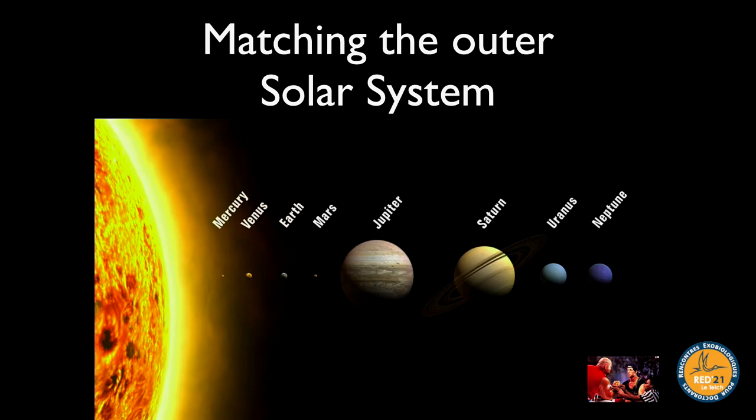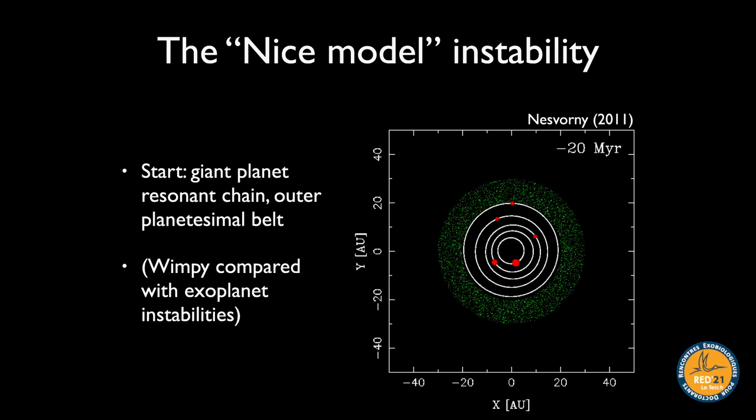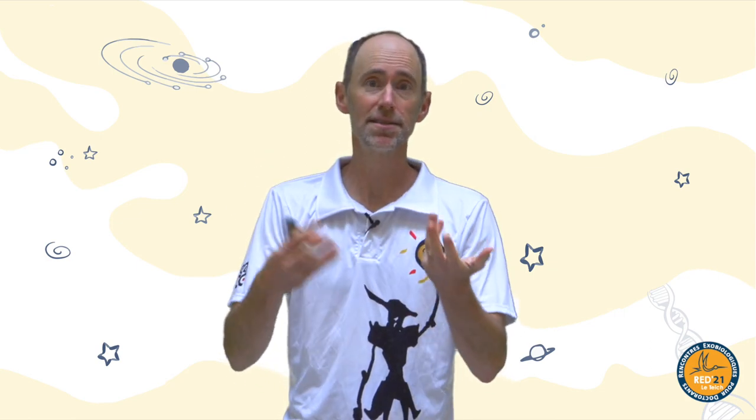Zooming out to the outer solar system: as with giant exoplanets, instabilities are basically ubiquitous in giant planet systems, and we think there was an instability in our own solar system too — much milder than those characterizing giant exoplanet systems, but still key. This is sometimes called the Nice model, developed in the French town of Nice. Early on, the giant planets probably migrated and got trapped in resonances with more compact orbits.